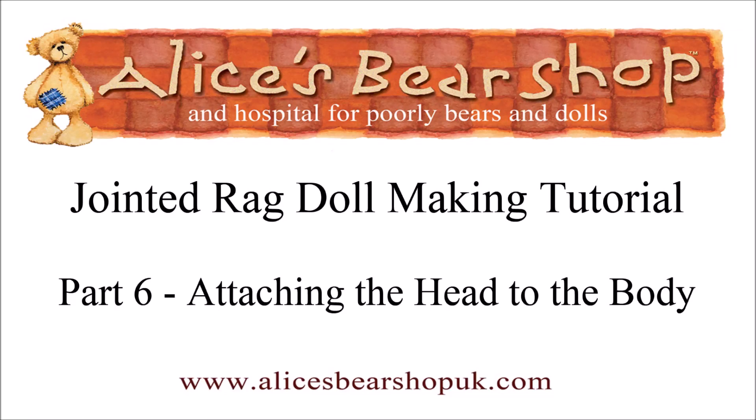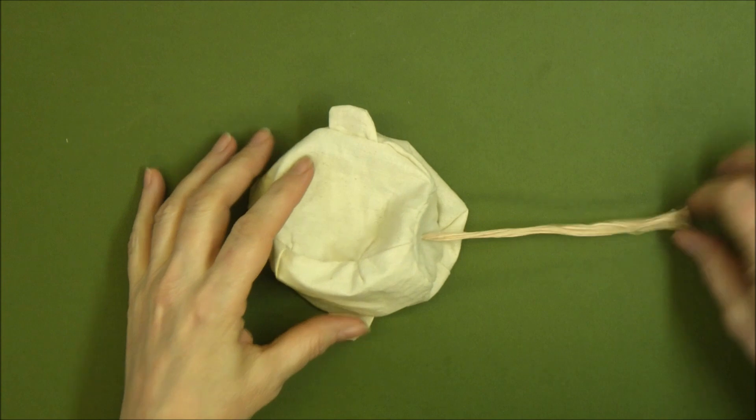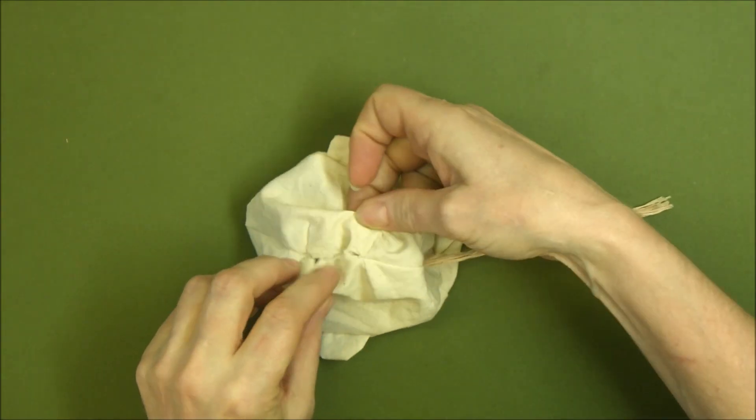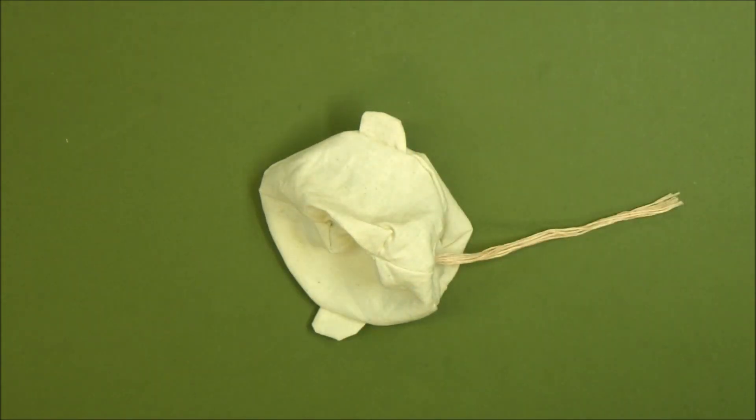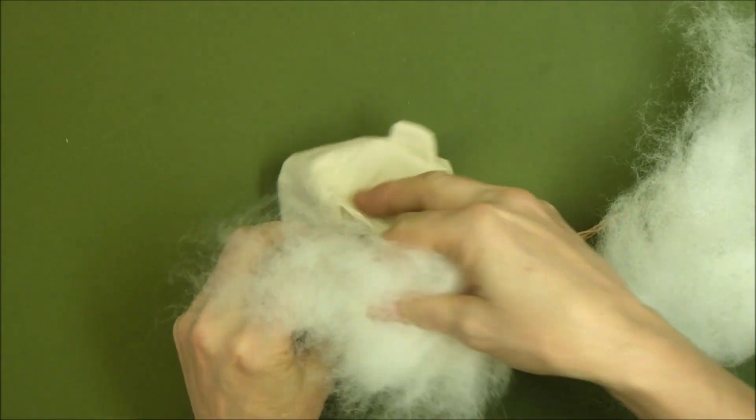Hello and welcome to this sixth tutorial video on how to make a button jointed ragdoll. I've got my threads hanging from my button joint. Like me, you might have had to use a hardboard disc or something to make it a little bigger, and now I'm going to fill the head with small pieces of polyfiber.